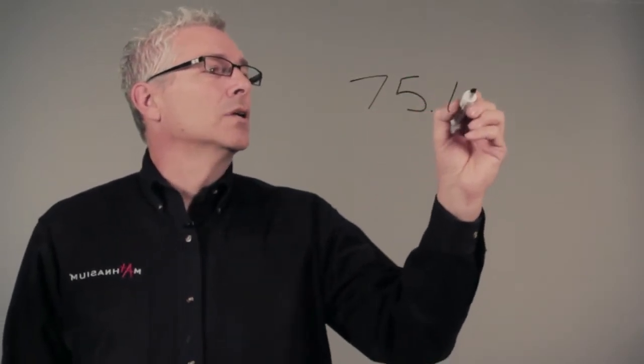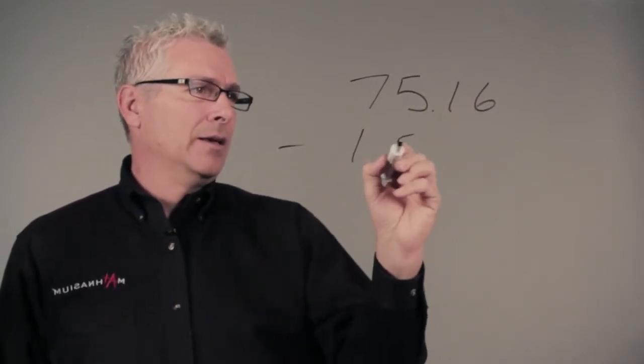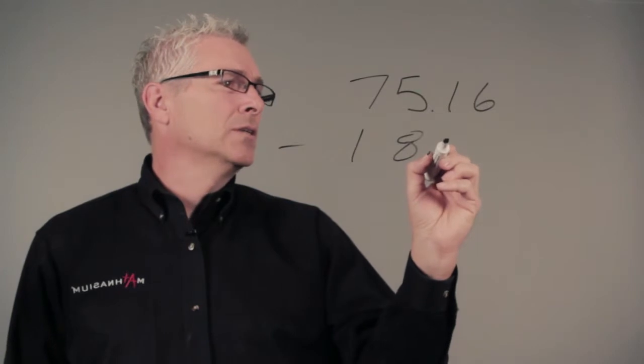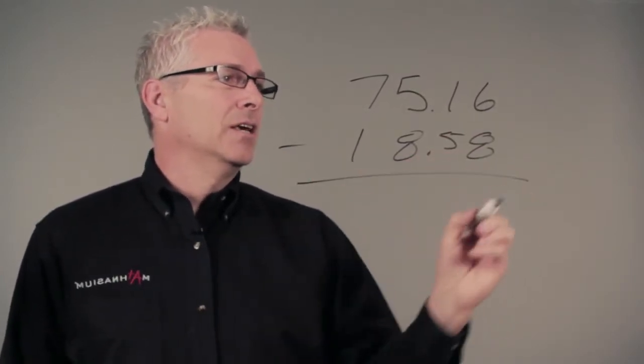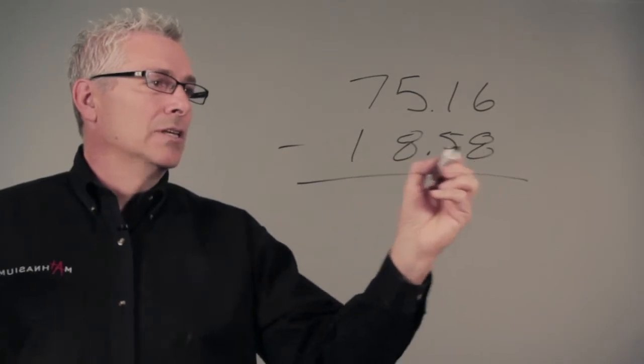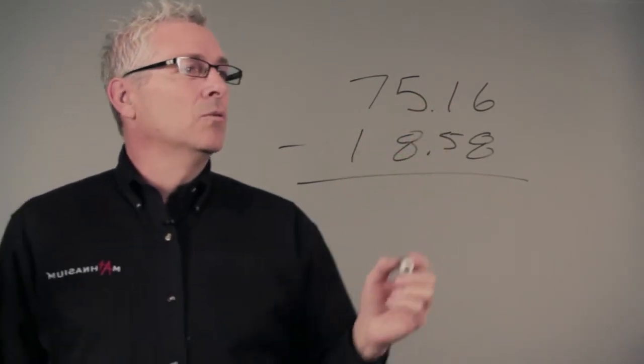So I am going to have 75.16. I'm going to subtract 18.58. As you can see, almost every one of these numbers is larger than the one above it. What do we do?